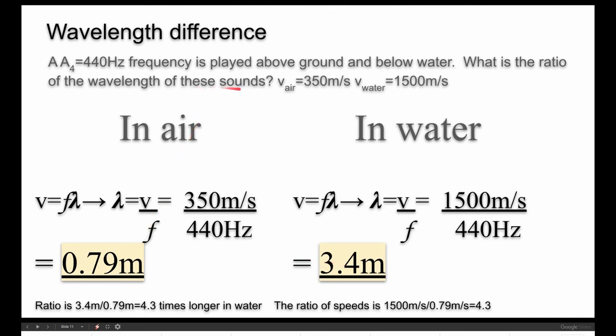And you just divide 3.4 over 0.79. Now, since it didn't say which way to do it, some of you would have done 0.79 divided by 3.4, but you would have got it's four times faster in water or it's four times, four times longer in water, four times shorter in air. And lo and behold, that's exactly the ratio of the speeds. If the speed of sound is twice as big in one material, then the wavelengths will become twice as big.